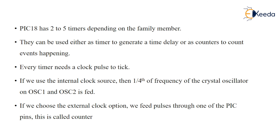The programmer has to give this configuration in their assembly language or C language program. Every timer needs a clock pulse to operate. If you use the internal clock source, your crystal frequency has to be divided by four, because we have four machine cycles — so the timer frequency is one-fourth of the crystal oscillator frequency. OSC1 and OSC2 are the two pins where you attach the crystal.